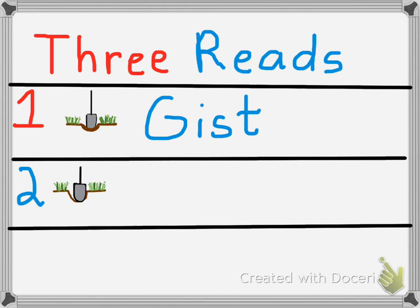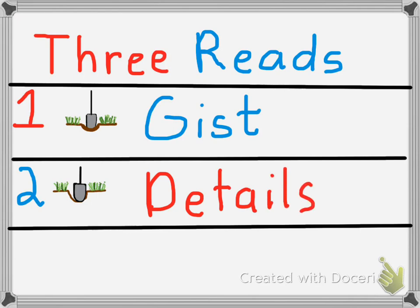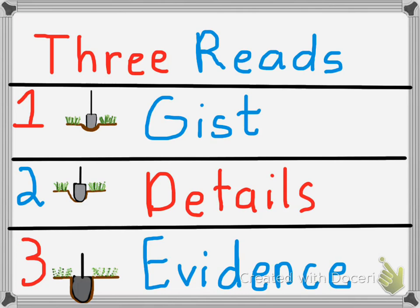In our second read or second phase, we are going to dig a little deeper and look at key details in the text. We are going to focus on concepts like author's purpose as well as key vocabulary. In our third read or phase, we are going to dig really deep looking at key evidence in the text. This evidence will be important to help us truly understand what the text is about.